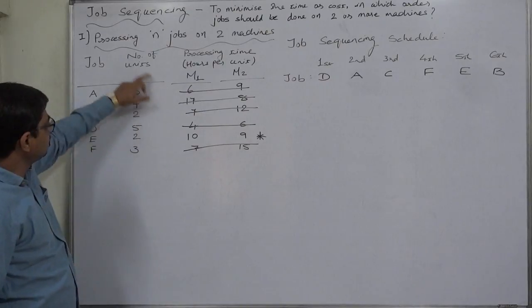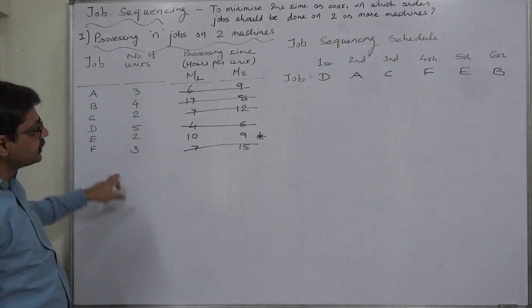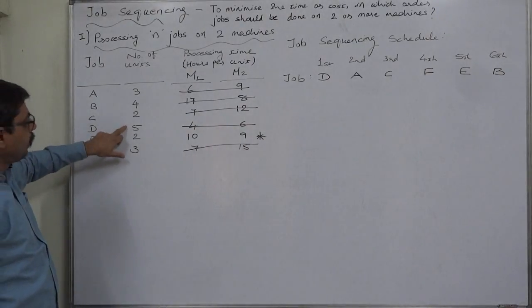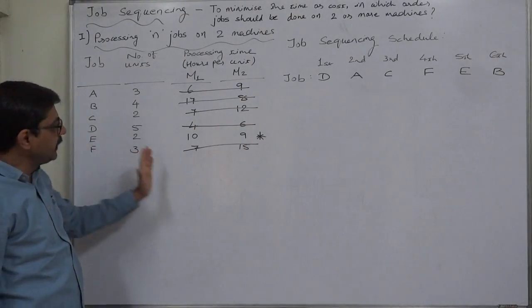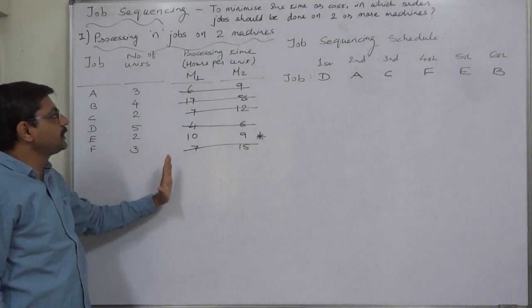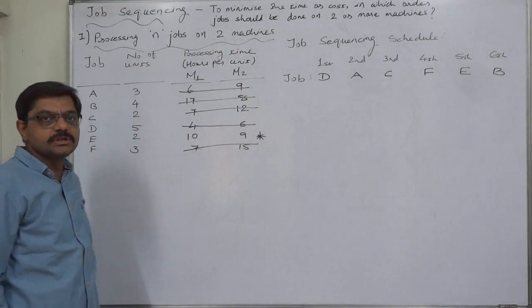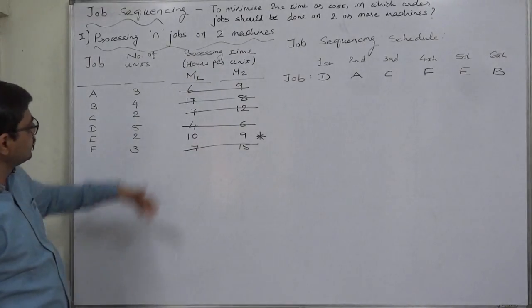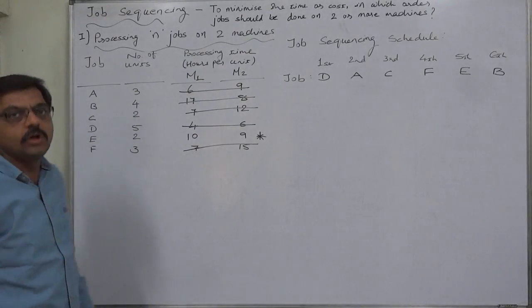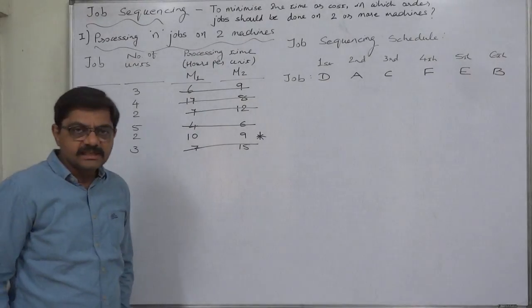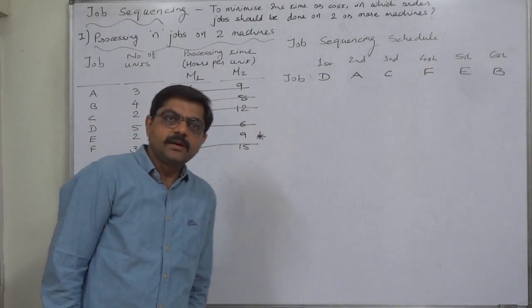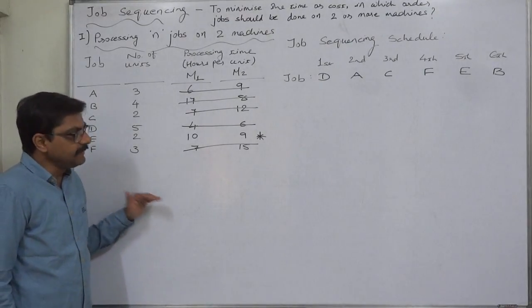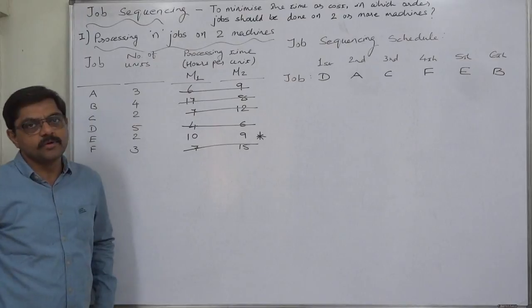But in that statement, the new thing will be that we are going to consider the number of units in each job. In job B, we are going to produce five units, so all five units will be processed on machine one first and on machine two then. In that order, we have to consider all the number of units of all the jobs. So in the next lecture, we are going to prepare the statement of total time and idle time, considering the number of units.